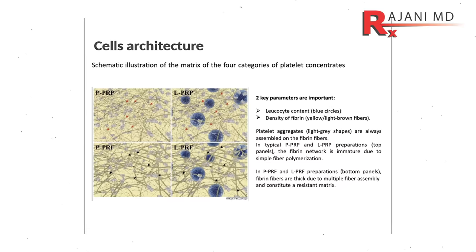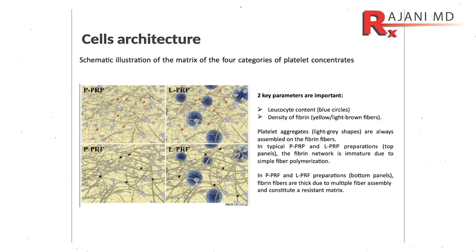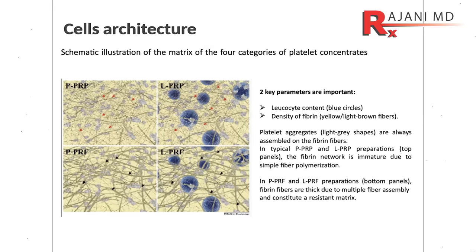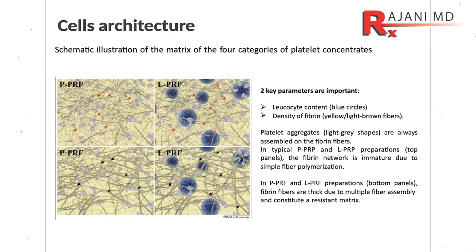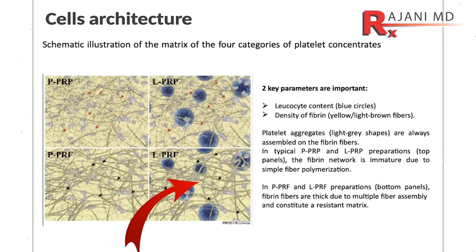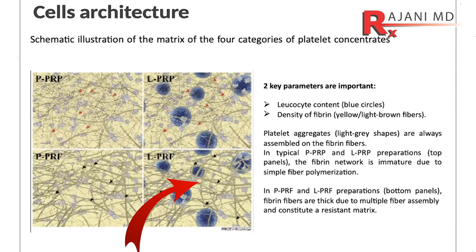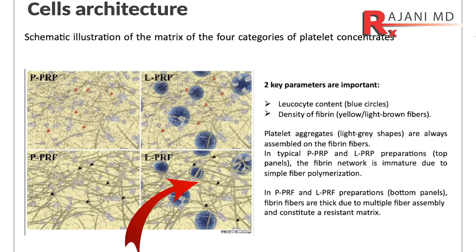The next key factor is the fibrin. In this slide you can see the fibrin matrix. At the top are two PRP samples — PRP and PRP with white cells — and then below, look at the thickness of the fibrin matrix when you have platelet-rich fibrin with the white blood cells.